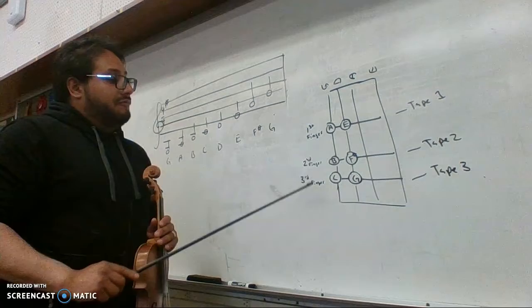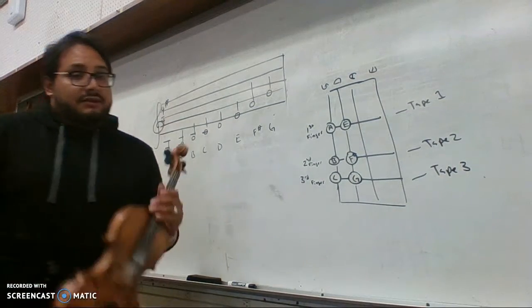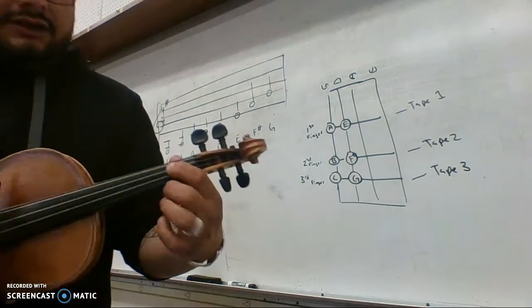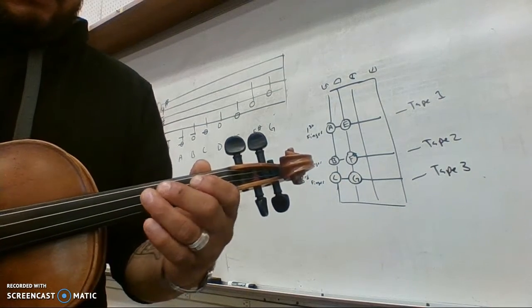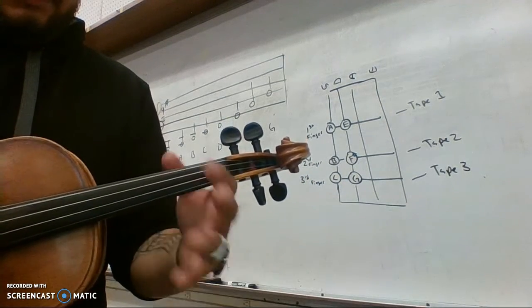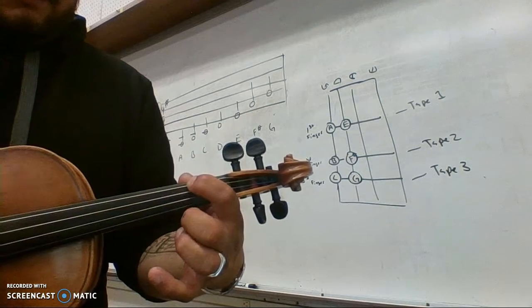For the E, F sharp, and G, we're using the same finger movement but just on the D string. Your E is going to look like this, F sharp, then G. Starting with G low, then A, then B.